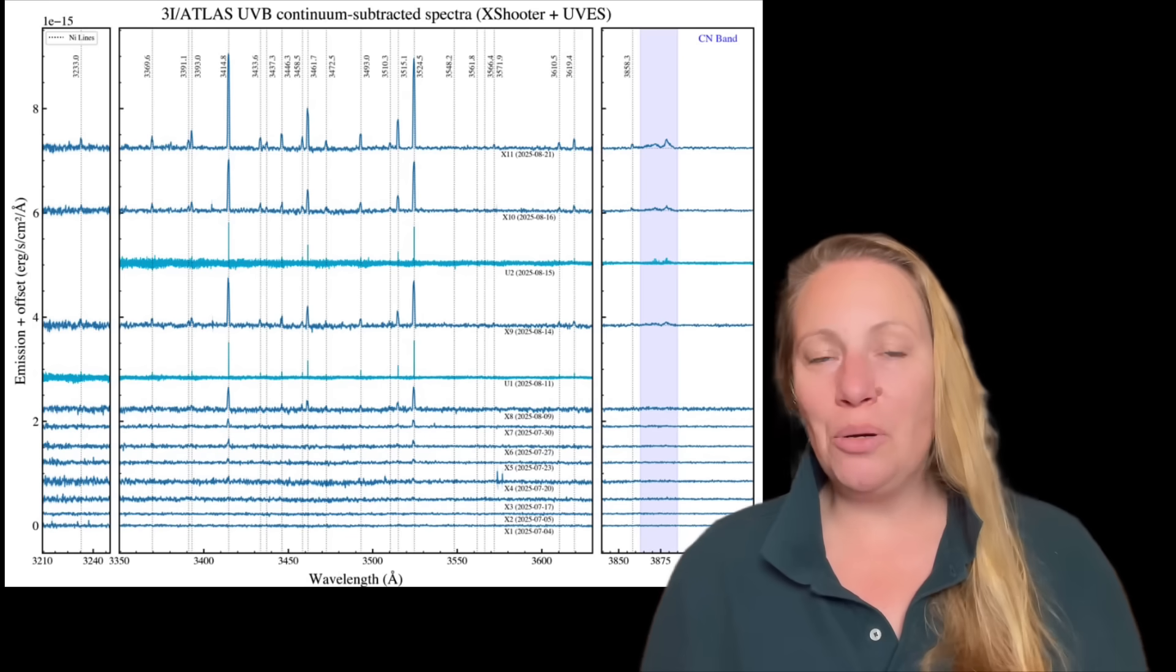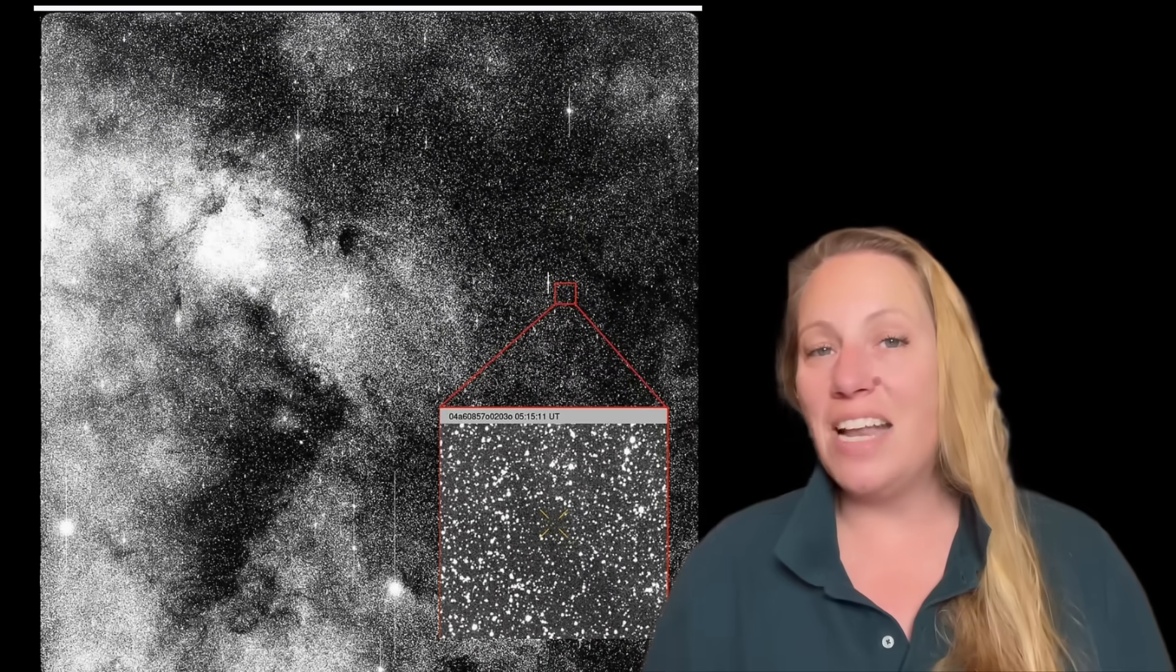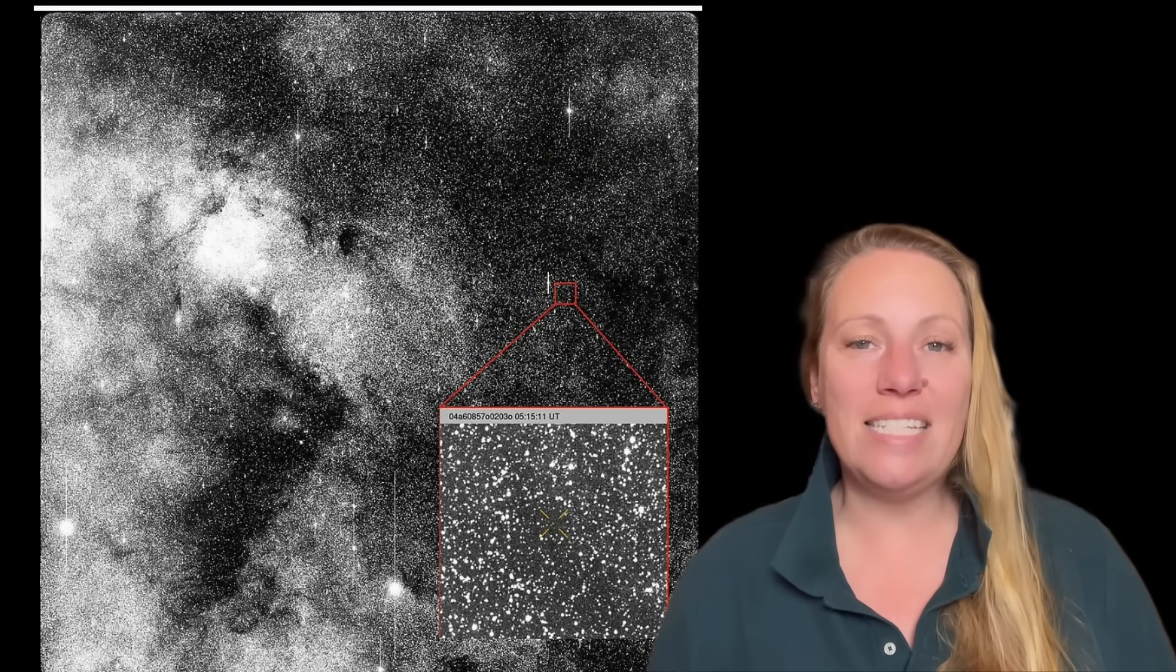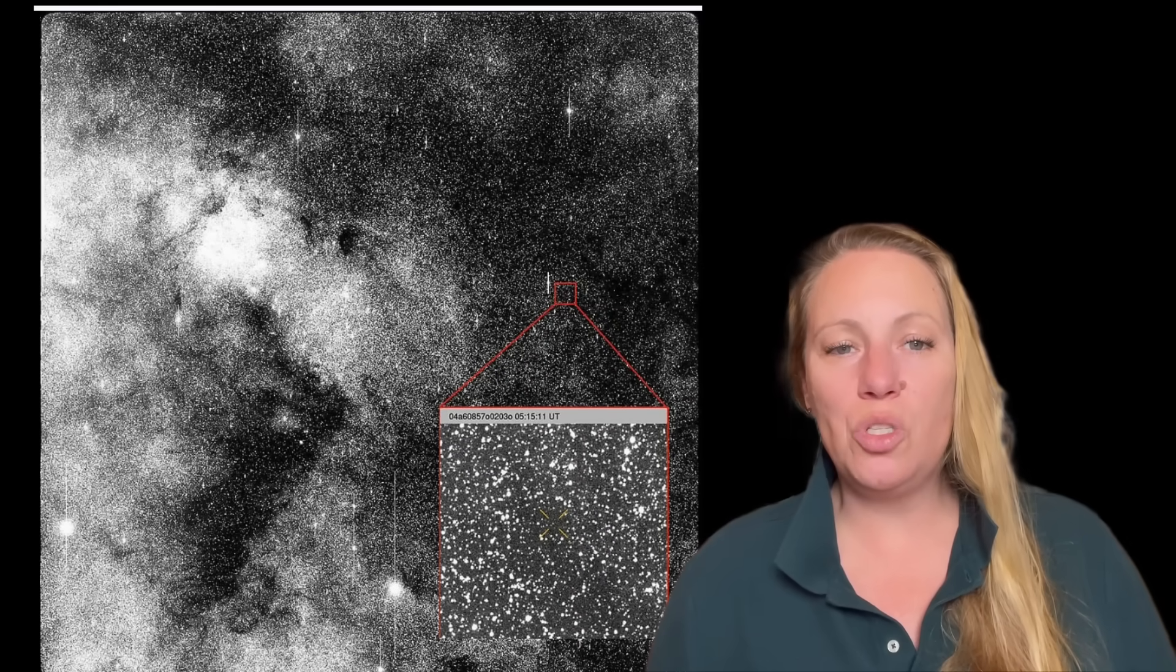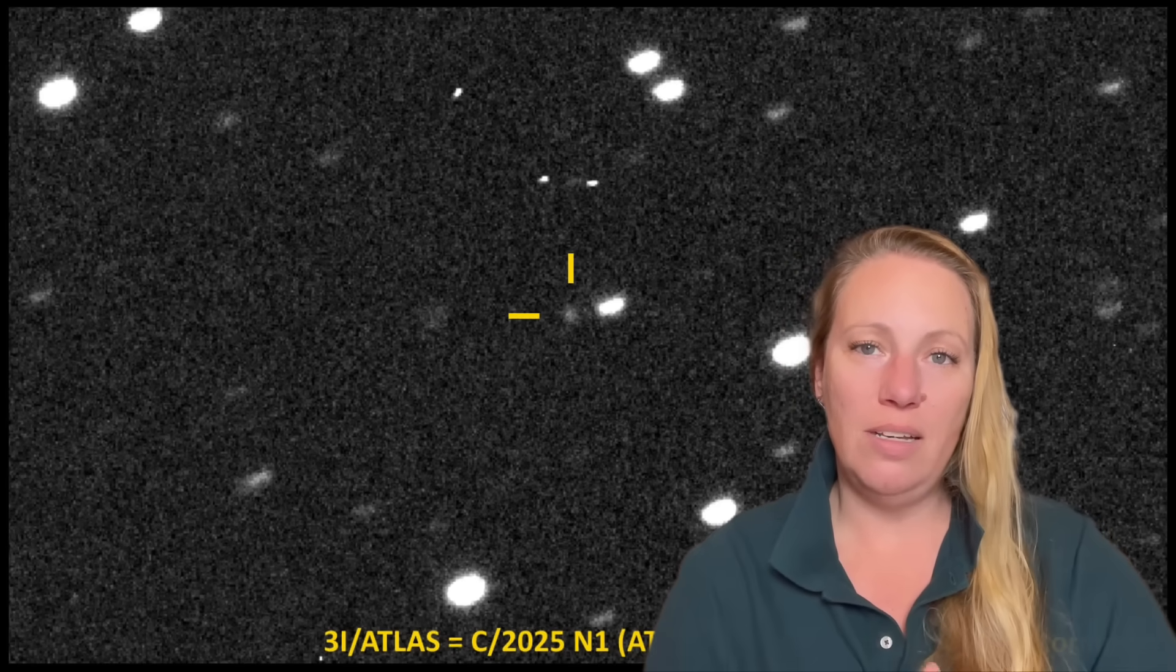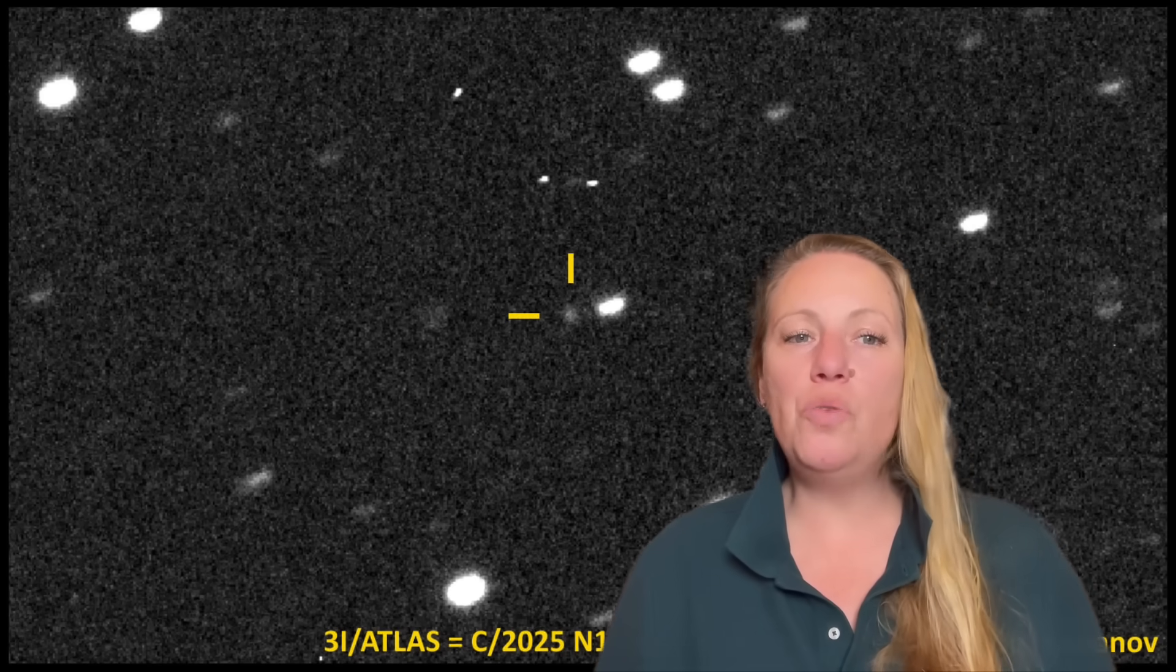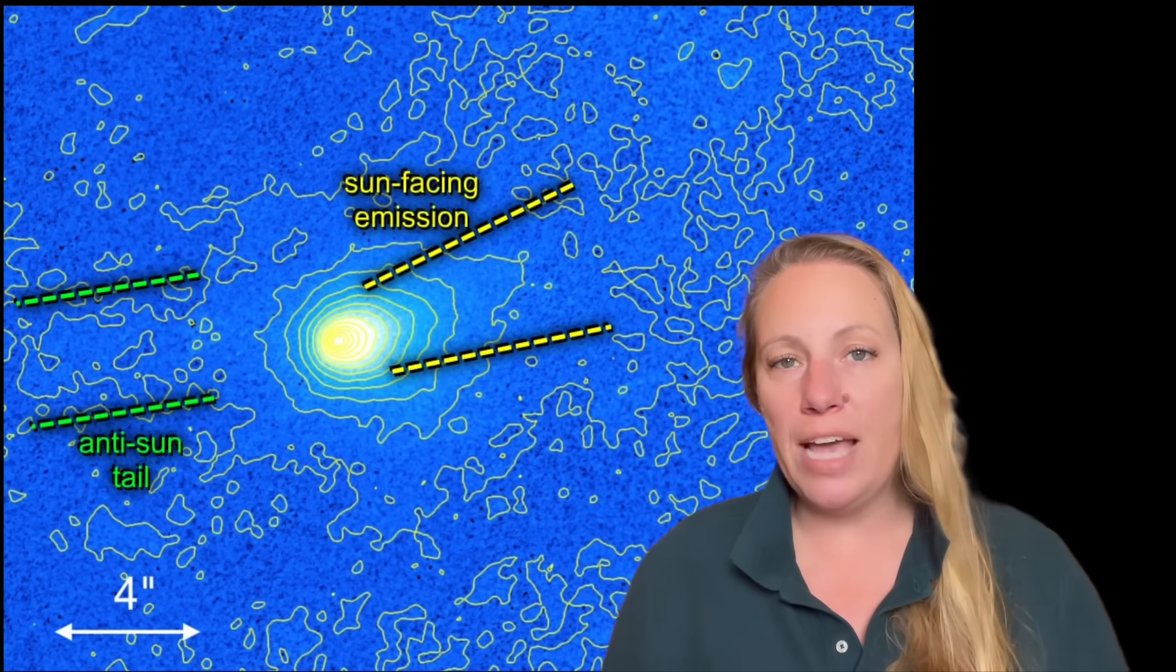And then he quotes Sherlock Holmes, which is also interesting. There's nothing more deceptive than an obvious fact. It's a critical mistake to theorize before one has data. Insensibly, one begins to twist facts to suit theories instead of theories to suit facts. So that's what Avi Loeb hopes NASA would do. Scientists should learn something new from anomalies, rather than display the arrogance of expertise.